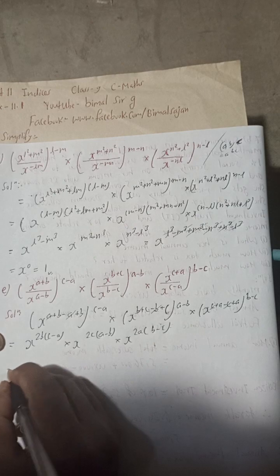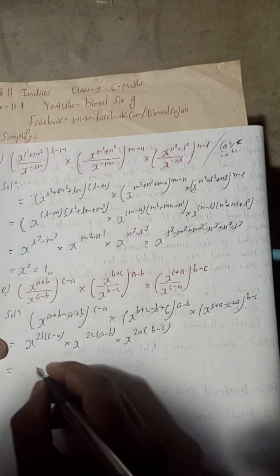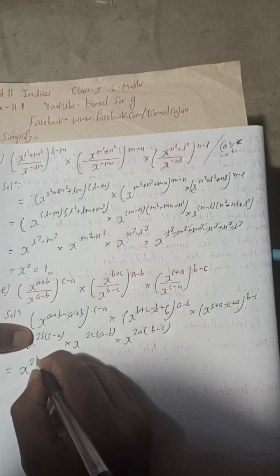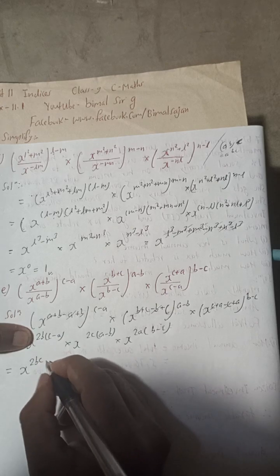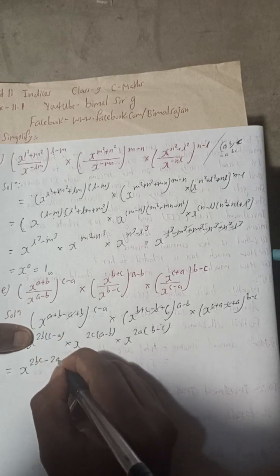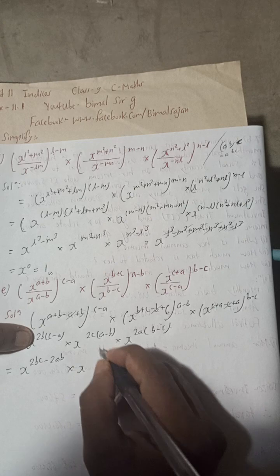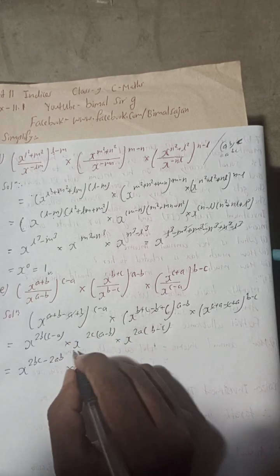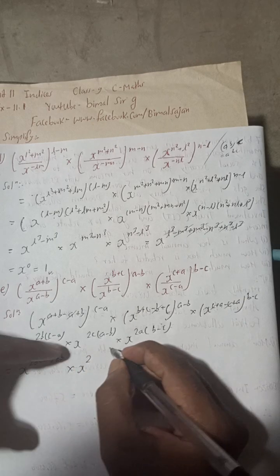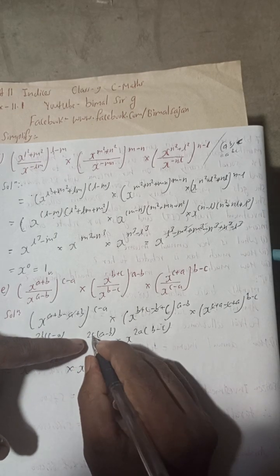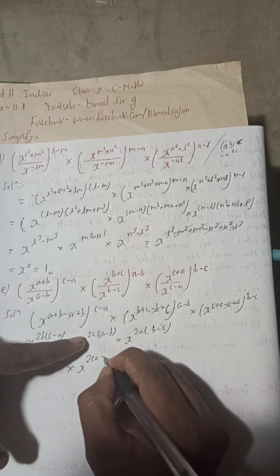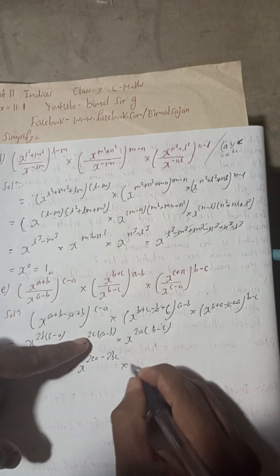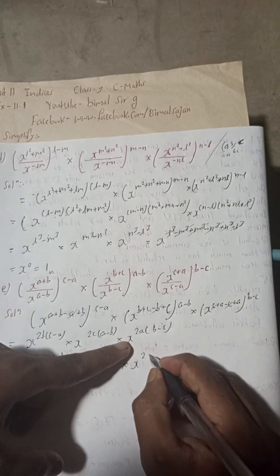Now we can expand the brackets. This gives x to the power 2bc minus 2ab, multiplied by x to the power 2ca minus 2cb, multiplied by x to the power 2ab minus 2ac. Since all are in multiplied form, we can add the powers together.